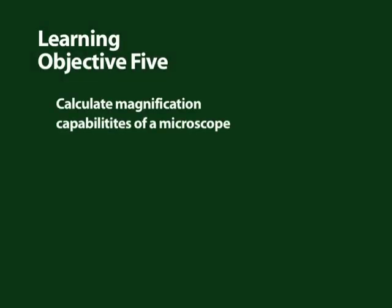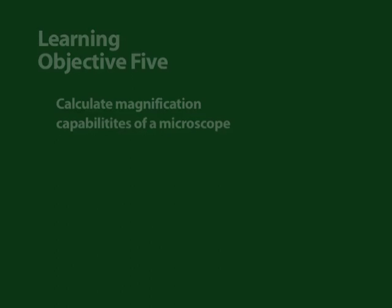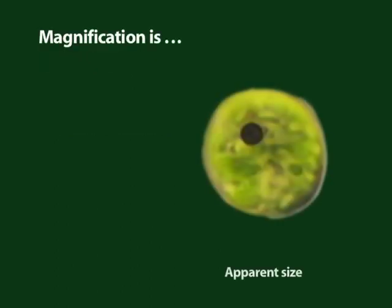The learning objective of this section is to calculate the magnification capabilities of a microscope. Magnification is the ratio of the apparent size of an image to the actual object.